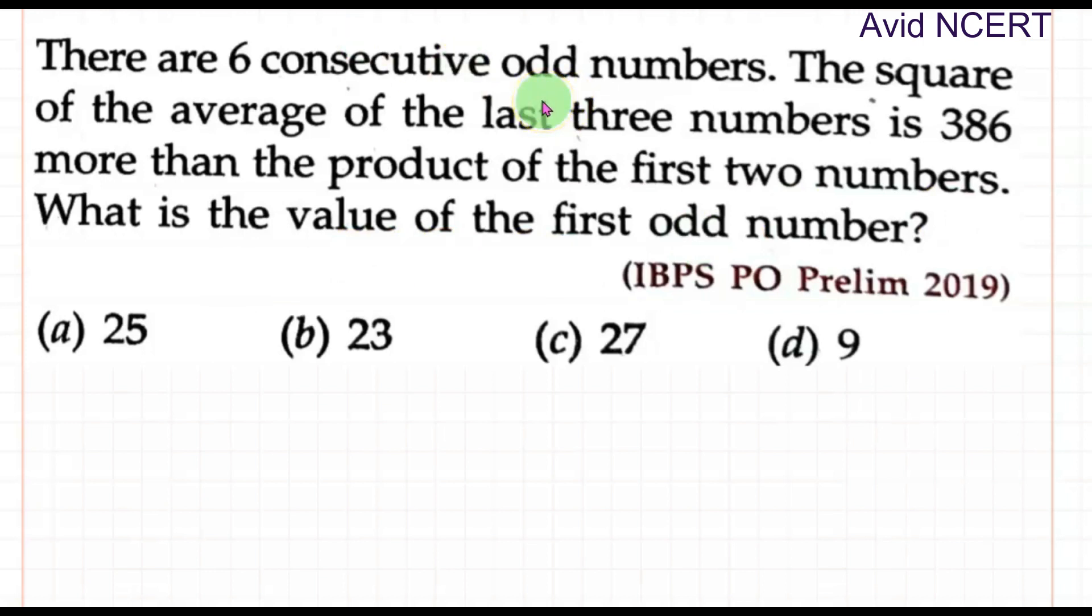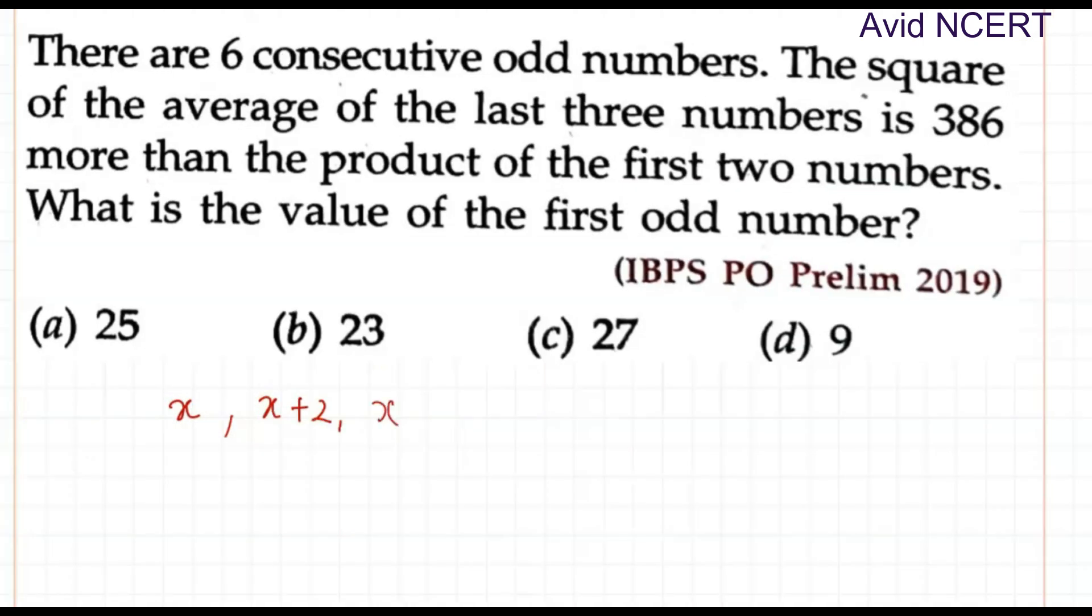Whenever consecutive odd numbers is mentioned, we go for x, x plus 2, and since it is mentioned as six consecutive numbers, we'll write six terms: x plus 4, x plus 6, x plus 8, and x plus 10.